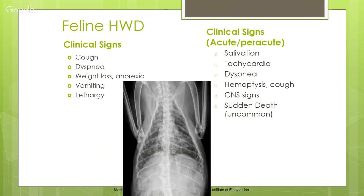Clinical signs of feline heartworm disease include cough, dyspnea, weight loss, anorexia, vomiting, and lethargy. In acute or peracute cases there may be salivation, tachycardia, dyspnea, hemoptysis — blood in the cough — CNS/neurologic signs, and sudden death.